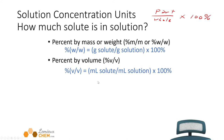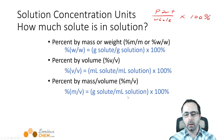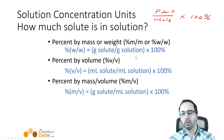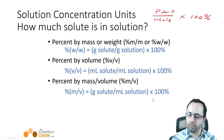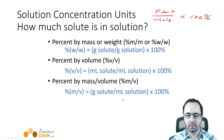Percent mass over volume: again, the solute is on top and the solution is on the bottom. Since this is percent mass over volume, the solute part on the top should have a mass in grams, and the volume part on the bottom should have a volume in milliliters.